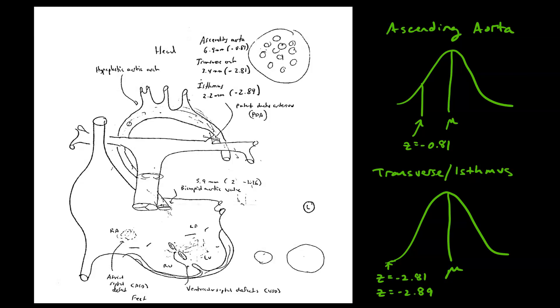One of her surgeons drew this picture for us—this is a picture of Eliza's heart before the surgery. This right here is the right atrium, left atrium, right ventricle, left ventricle.